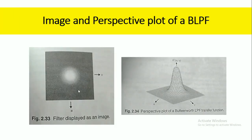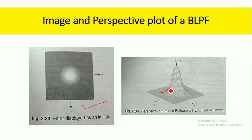This is the image and the perspective plot of the Butterworth low pass filter. When viewing the Butterworth low pass filter characteristics as an image, here is the representation displayed as an image, and here is the perspective plot. If you take the radial cross section, as the order of the Butterworth low pass filter increases, it exhibits ideal low pass filter characteristics.